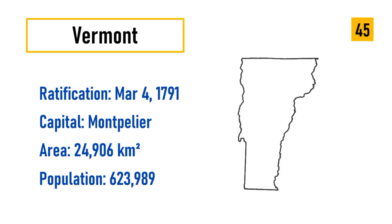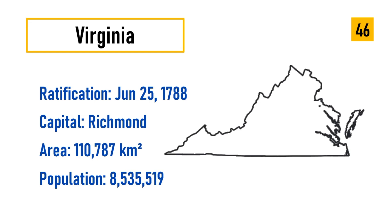Number 45: Vermont, ratification March 4, 1791, capital Montpelier, area 24,906 square kilometers, population 623,989. Number 46: Virginia, ratification June 25, 1788, capital Richmond, area 110,787 square kilometers, population 8,535,519.